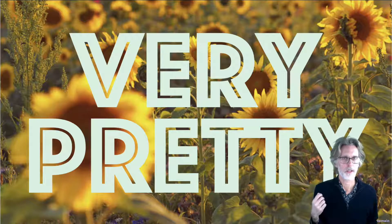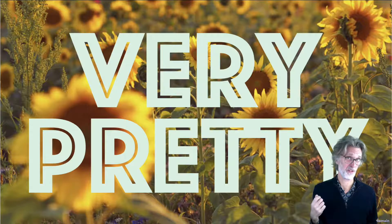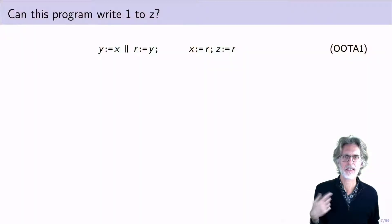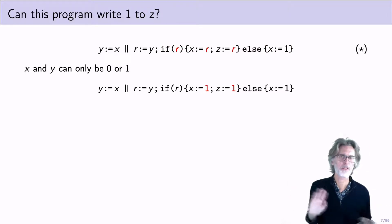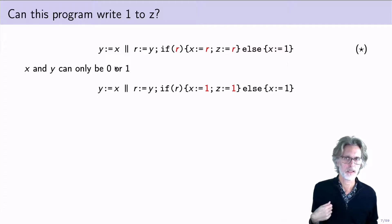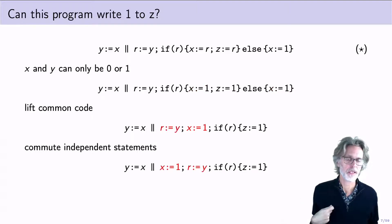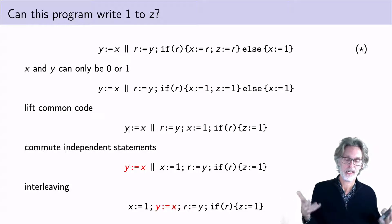The true test of a relaxed memory model, however, is how it deals with unexecuted code. To see why, let's take this example and embed it in a larger program. So here, just to remember, this thing should not be able to write 1 to z. Let's put it in a conditional where I may have an alternative world where I actually write 1 to x. Now, it may be surprising, but this program can actually write 1 to z now. Now, how does this work? Well, a compiler may notice that the values for x and y can only be 0 or 1, and therefore, it can do some constant inlining, then lift the common code out of the loop, then reorder the independent statements, and now if I interleave these things, obviously, I can get 1.